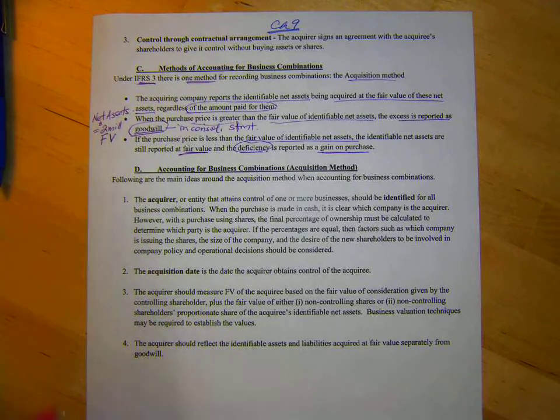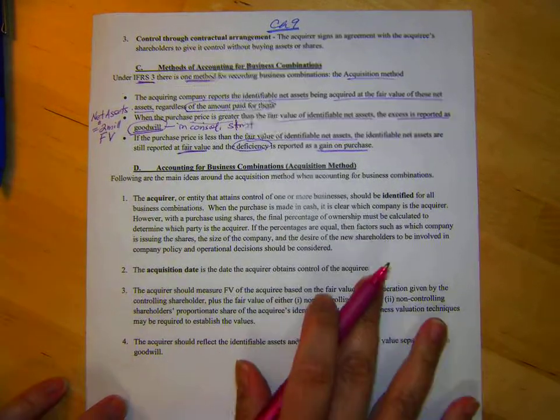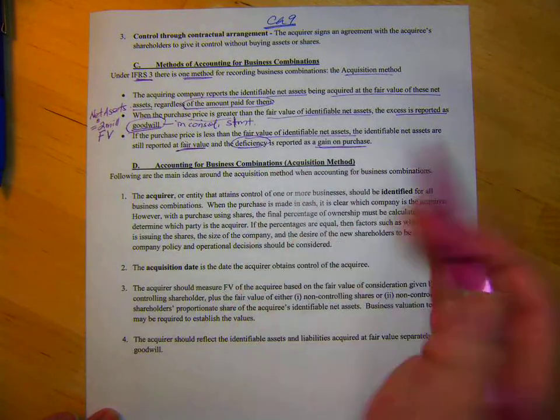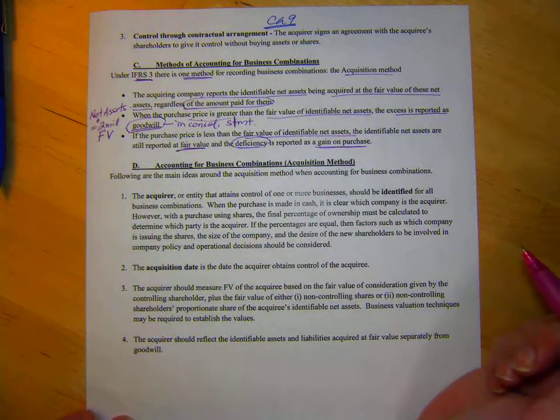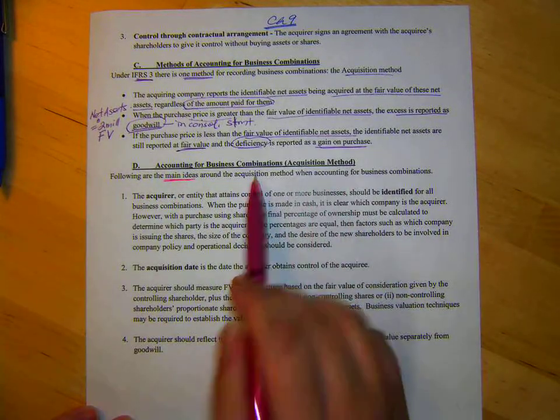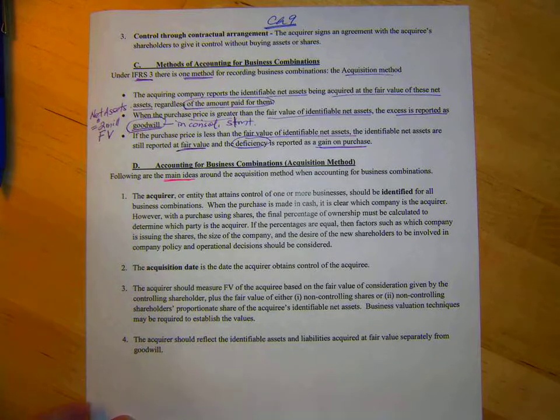Okay, now we are back on page two. I didn't get very far last time, did I? Part D, account for business combinations using the acquisition method. That's all we're going to use. Here are the main ideas that you want to think about or remember for the acquisition method when accounting for business combinations.